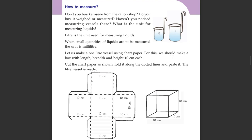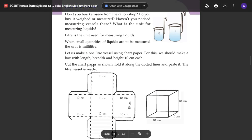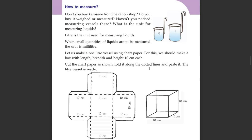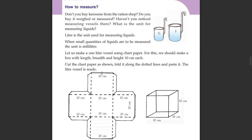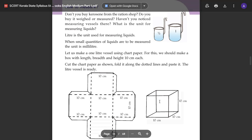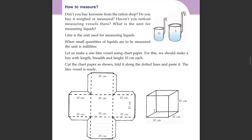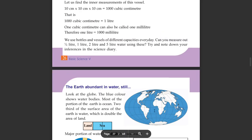For this, we should make a box with length, breadth, and height of 10 cm each. Cut the paper as shown. Fold it along the dotted lines and paste it. The little vessel is ready. Let us find the inner measurement of this vessel — length, breadth, and height are each 10 cm.